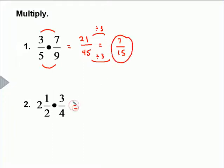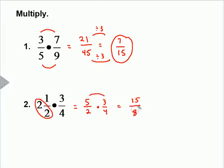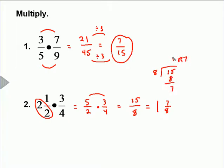Moving on to the next one — we have a mixed number and a fraction, so we need to convert it to an improper fraction first. Two times two is four, plus one is five, and we keep it over the two. Then we multiply that by three-fourths. Top times the top equals fifteen, and bottom times the bottom equals eight — fifteen-eighths. We can convert it back to a mixed number: eight goes into fifteen one time with seven left over, giving us one and seven-eighths.